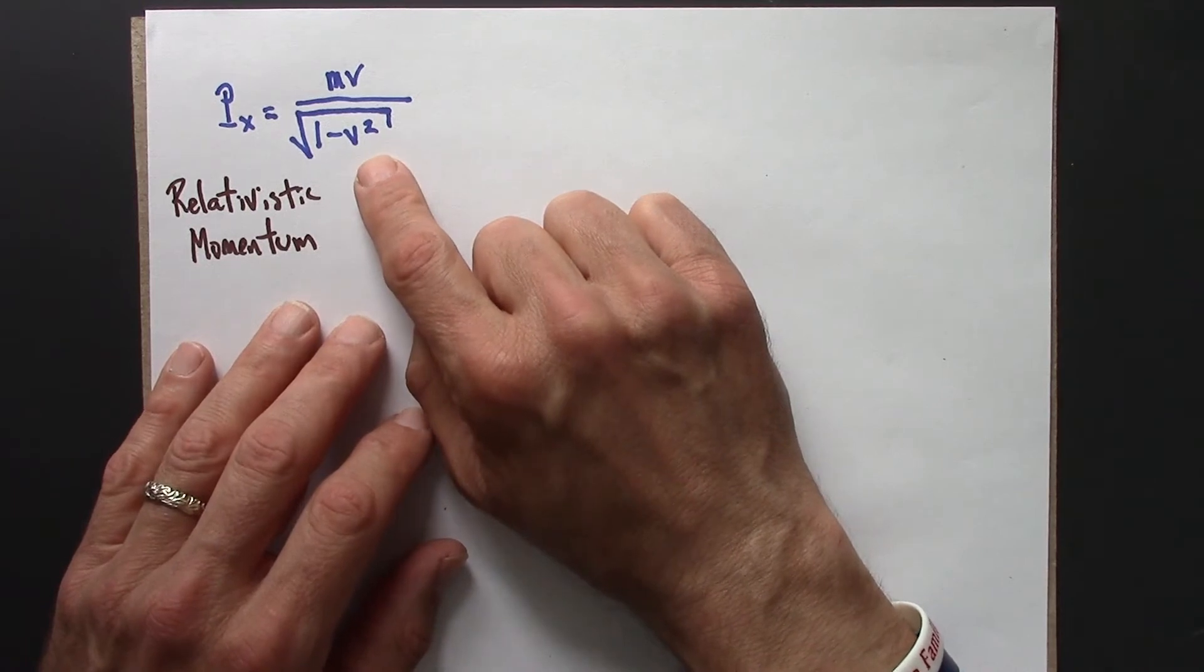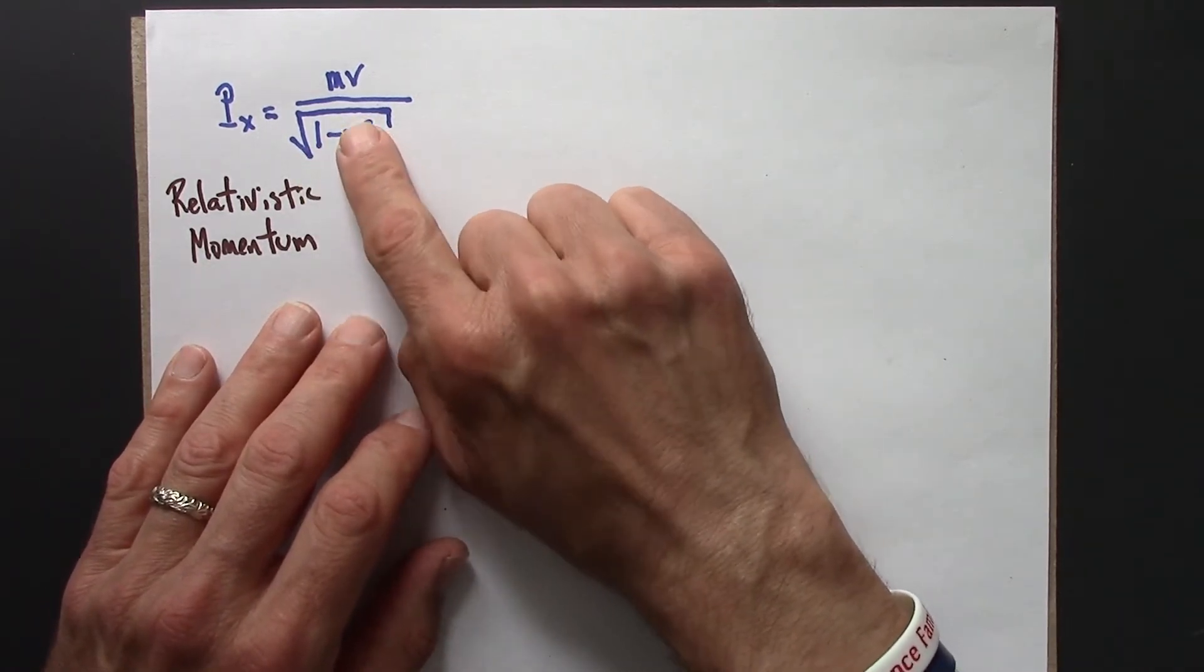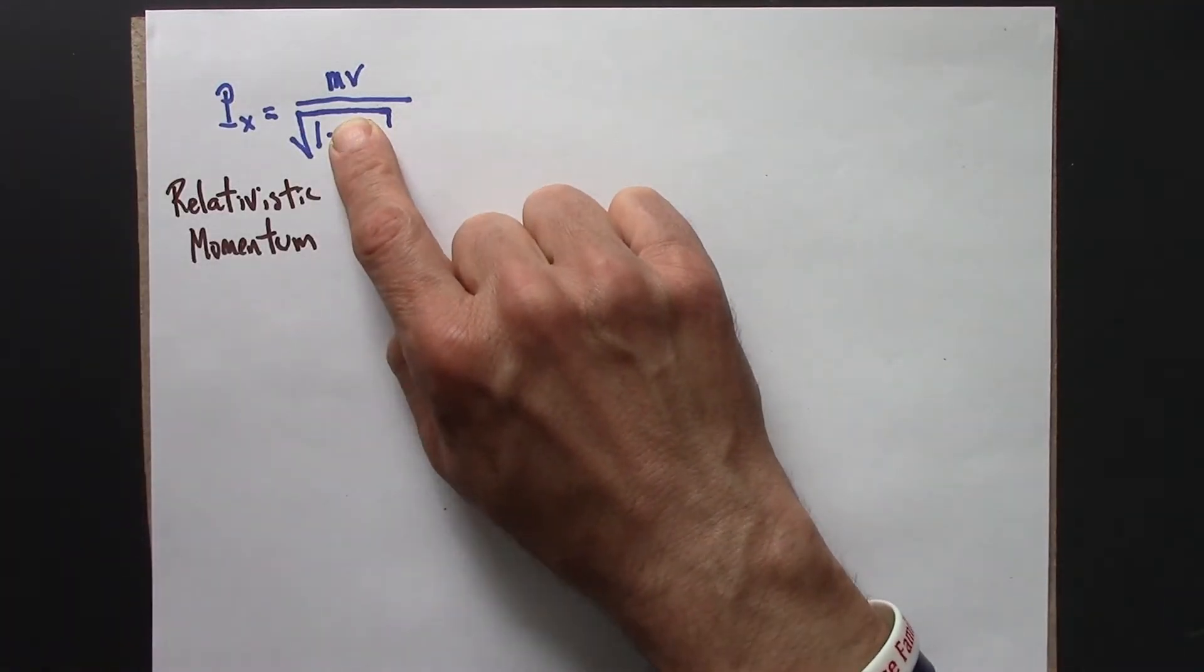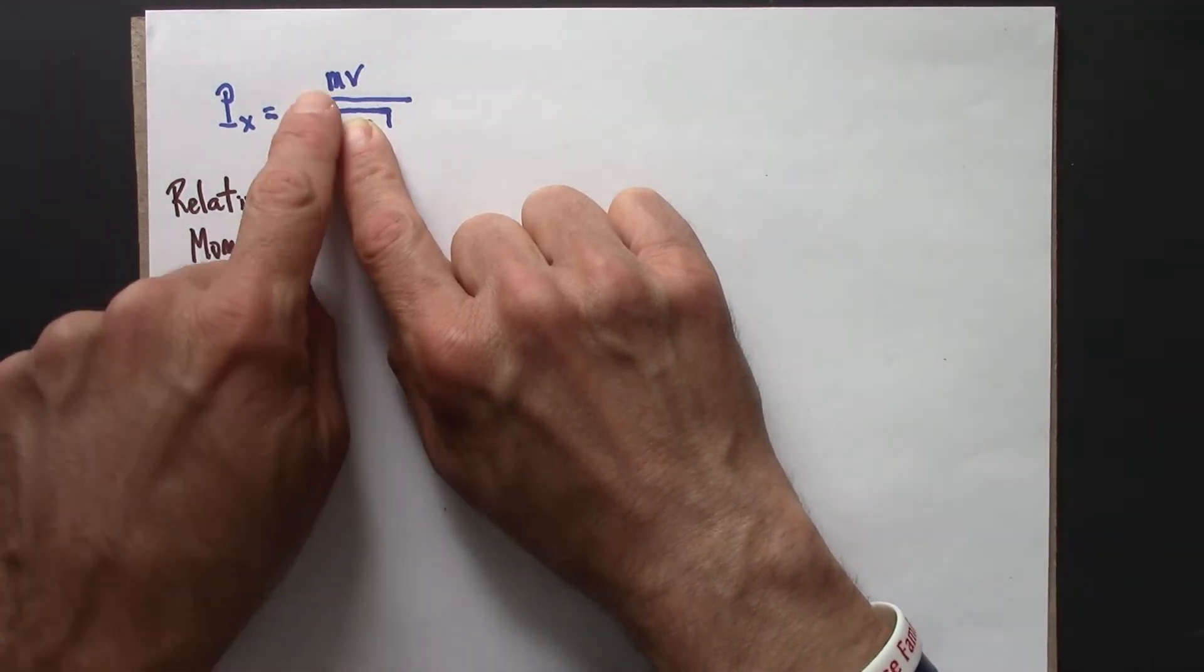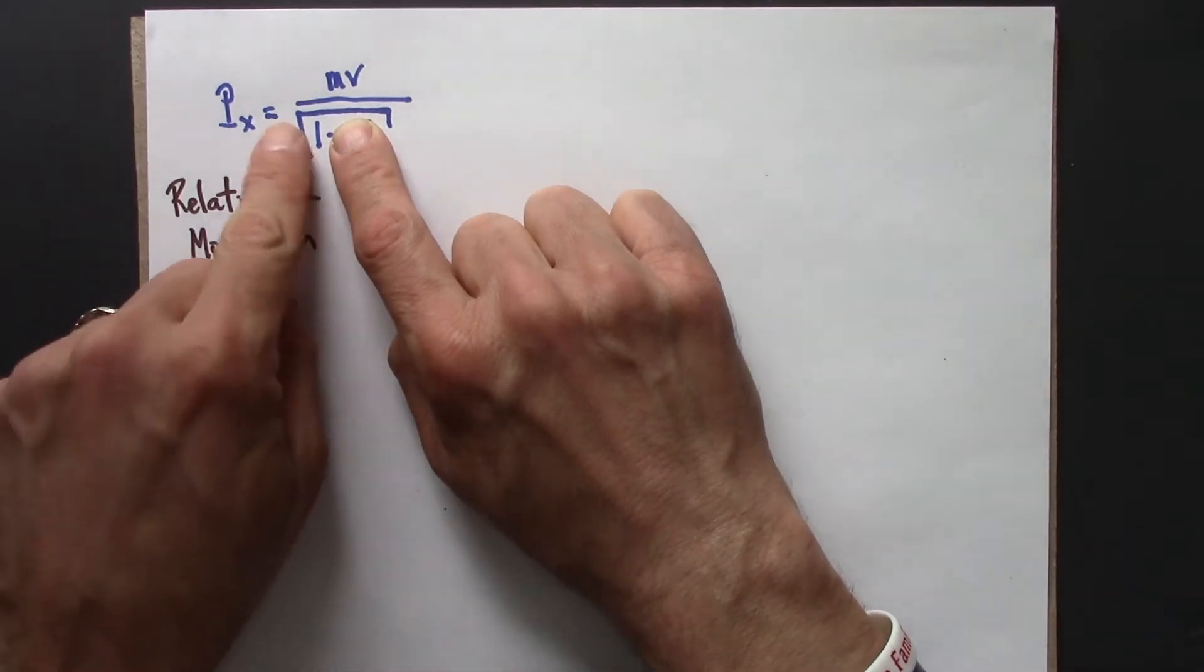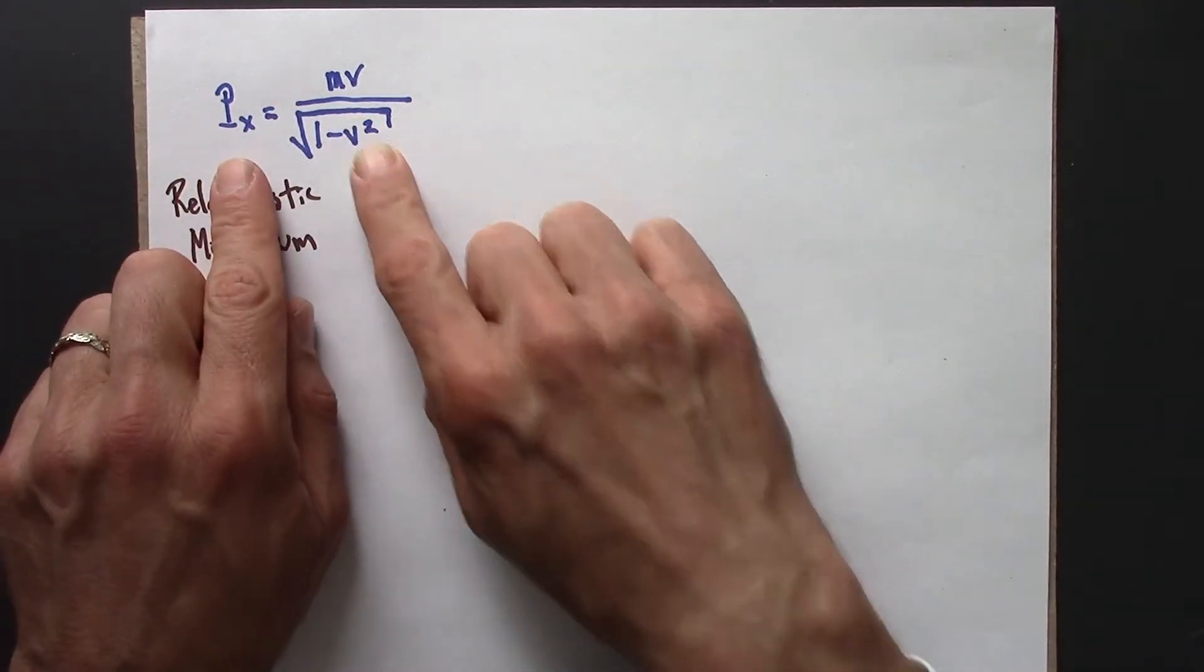v is small, v squared really small, 1 minus really small is essentially 1, and this just turns into mv. So in the non-relativistic limit, we recover the non-relativistic momentum. So that's hopefully a reassuring result.